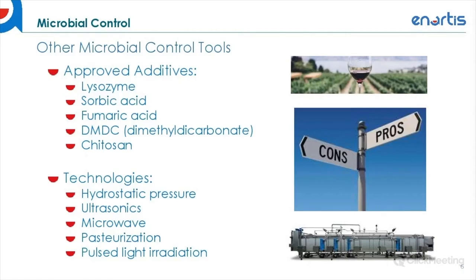We have DMDC, or dimethyl dicarbonate, commonly referred to as Velcorin in the industry, which is more effective against yeast than bacteria and molds. However, there has been some incidence of resistance, especially with lactic acid bacteria and acetic acid bacteria. This additive is very toxic, requires specialized equipment and accreditation, and is unpleasant to handle. Some available technologies include hydrostatic pressure, ultrasonics, microwave technology, pasteurization, and pulse light irradiation. Unfortunately, these are expensive, require specialized technicians, and some can negatively alter the organoleptic qualities of wine.